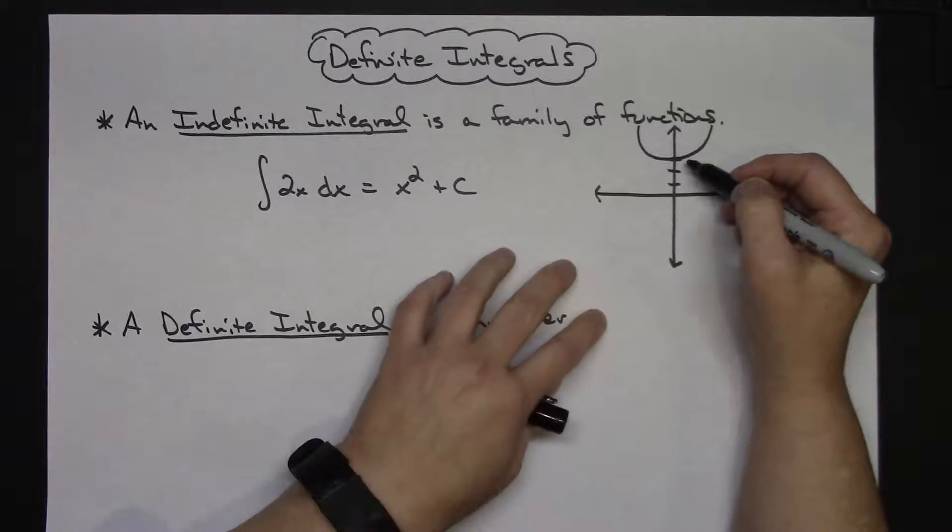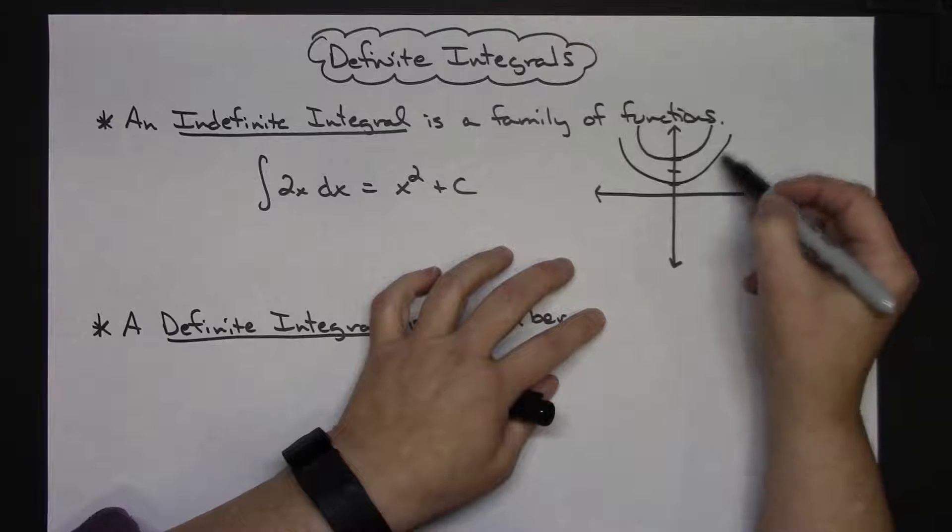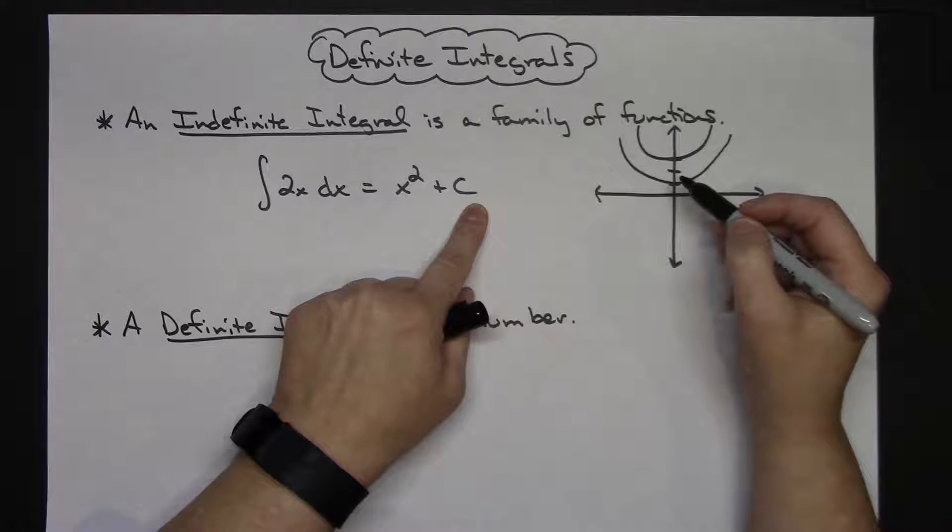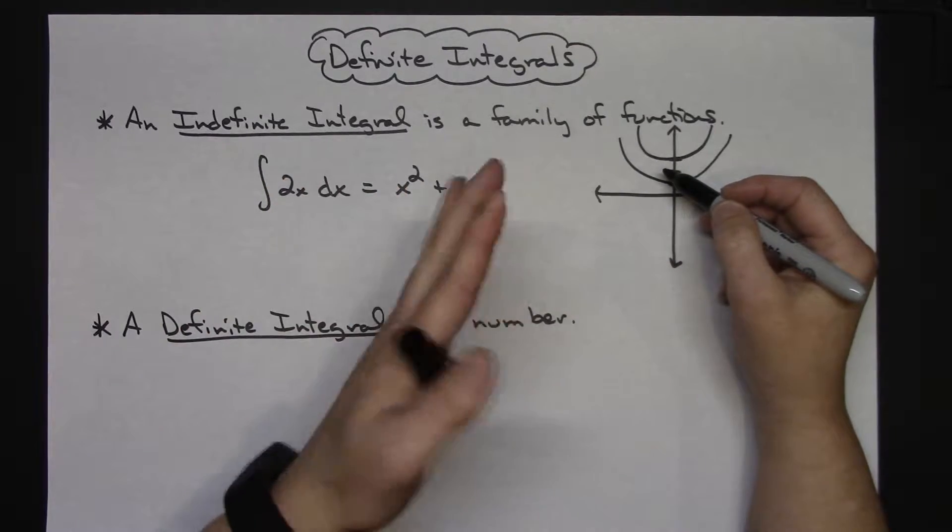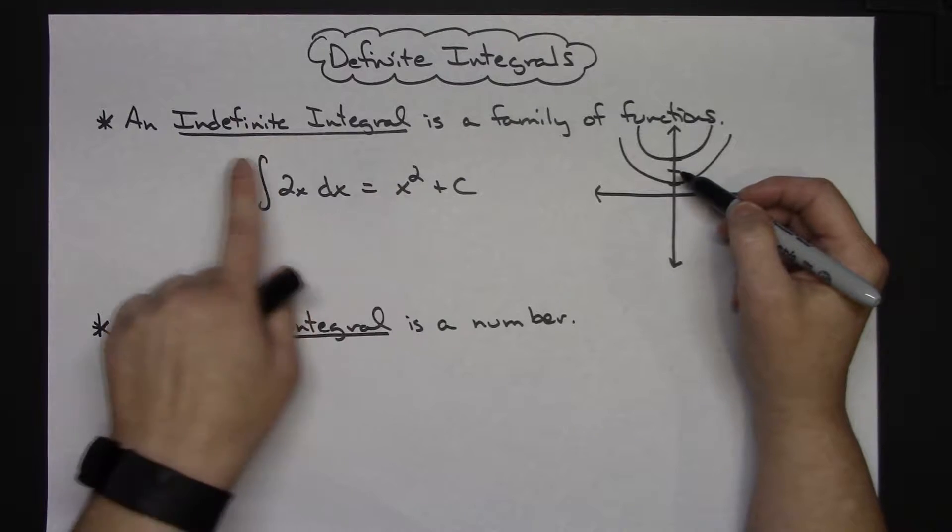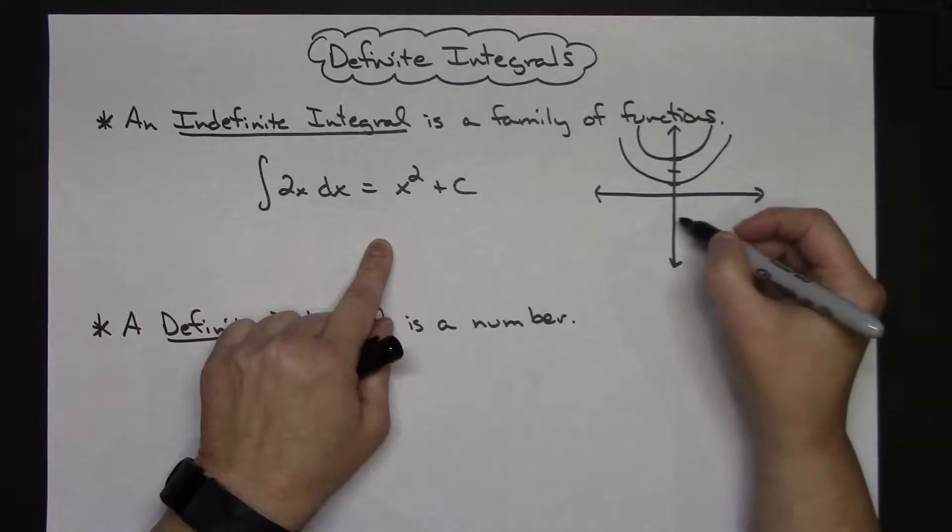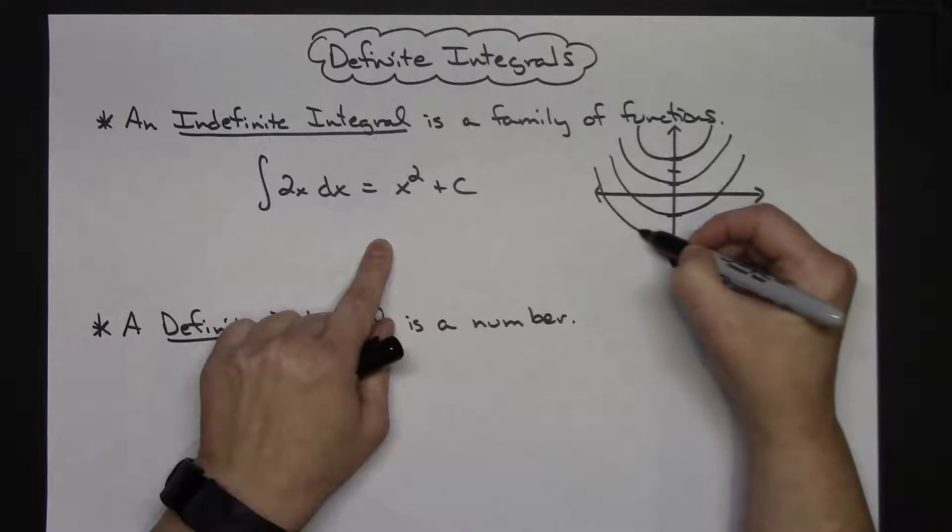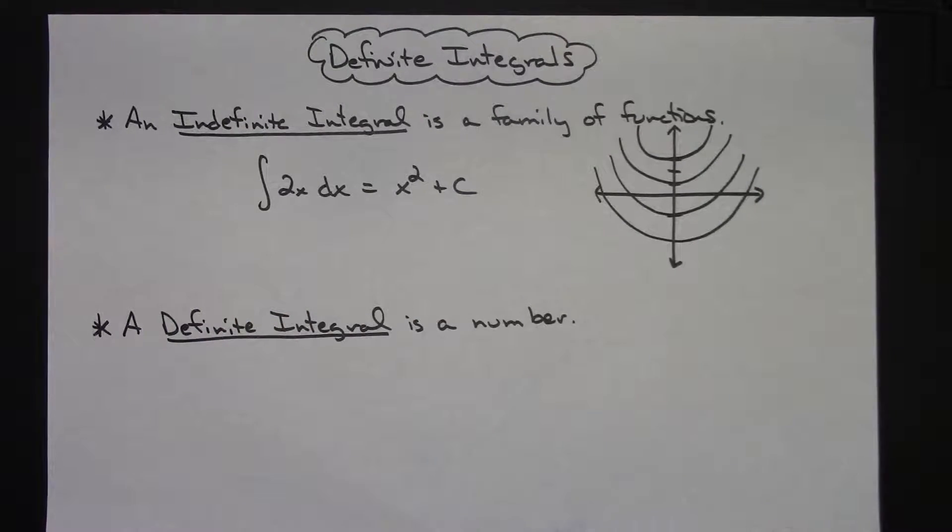So it could be that problem right there, or if I took a parabola and just shifted it up 1, that would be x squared plus 1. If I took the derivative of that I would get 2x because the one goes away. So this indefinite integral could be any one of these parabolas - a family of functions because I don't know exactly which one it is.